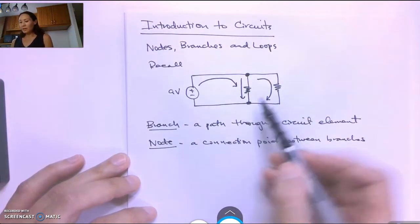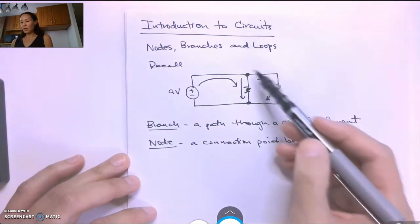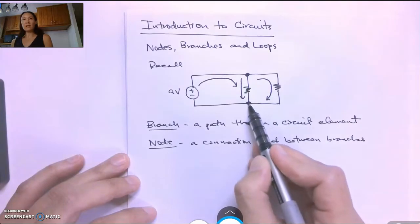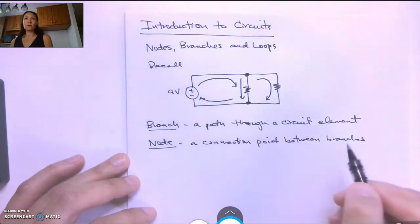Now the other node down here, if some current takes the first branch and some current takes the second branch, the current will reconvene at this second node here and then continue on back towards the source.